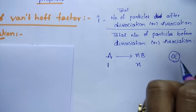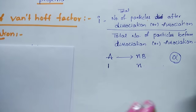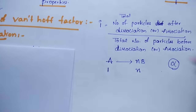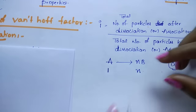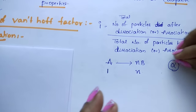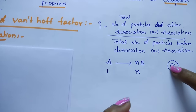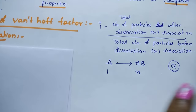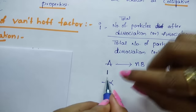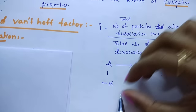Degree of dissociation means the fraction that dissociates at equilibrium. At equilibrium, some moles of A convert into B. For example, suppose initially there are 100 moles and 25 moles are converting into B — that gives 100 minus 25. So alpha is the number of moles converting into B. At equilibrium, moles of A remaining is 1 minus alpha, because alpha is the amount converting into B.